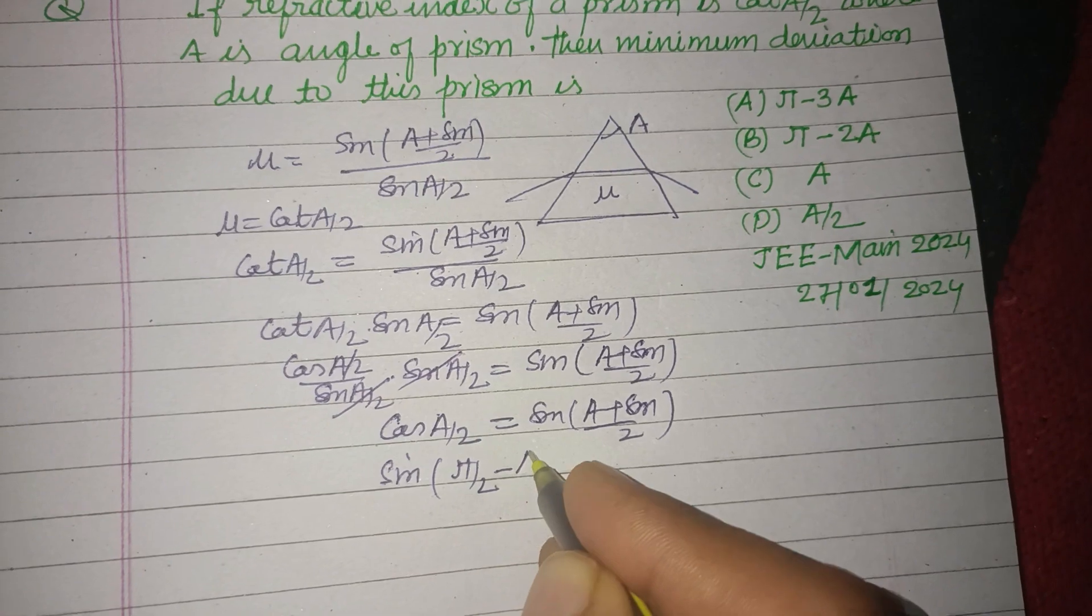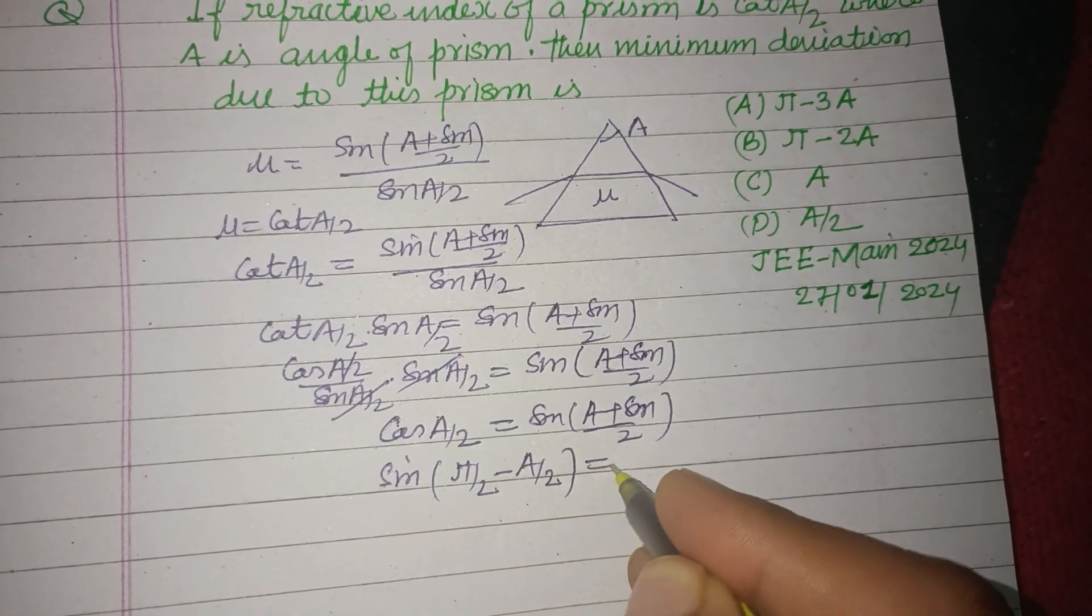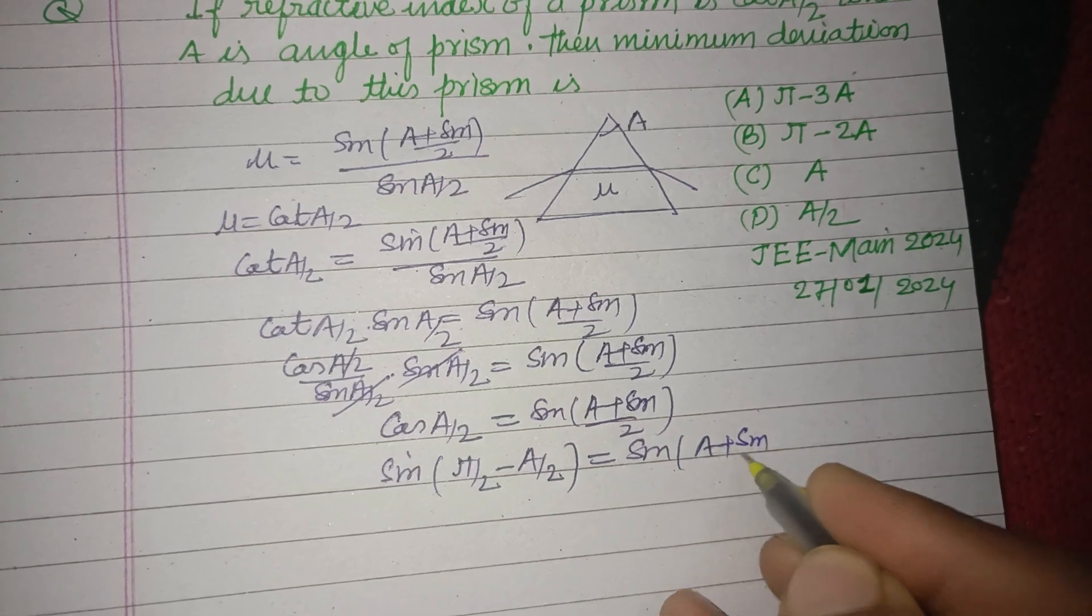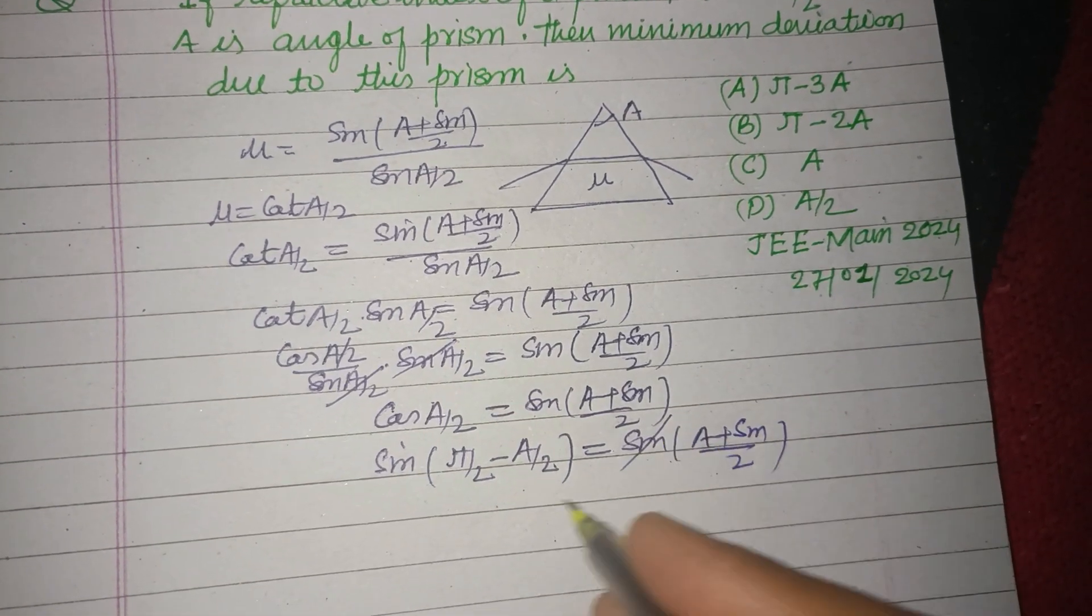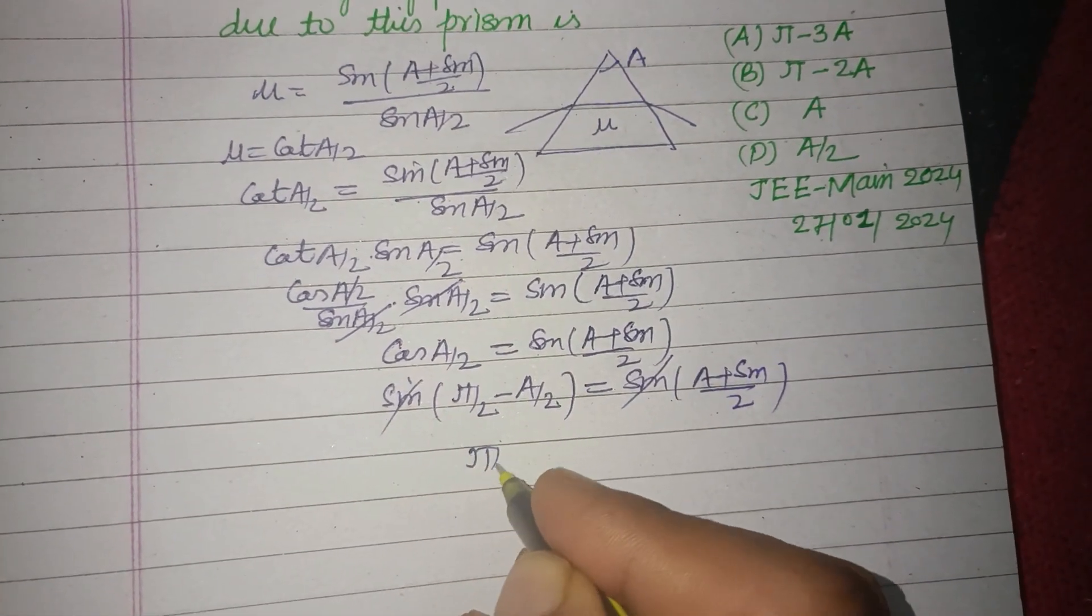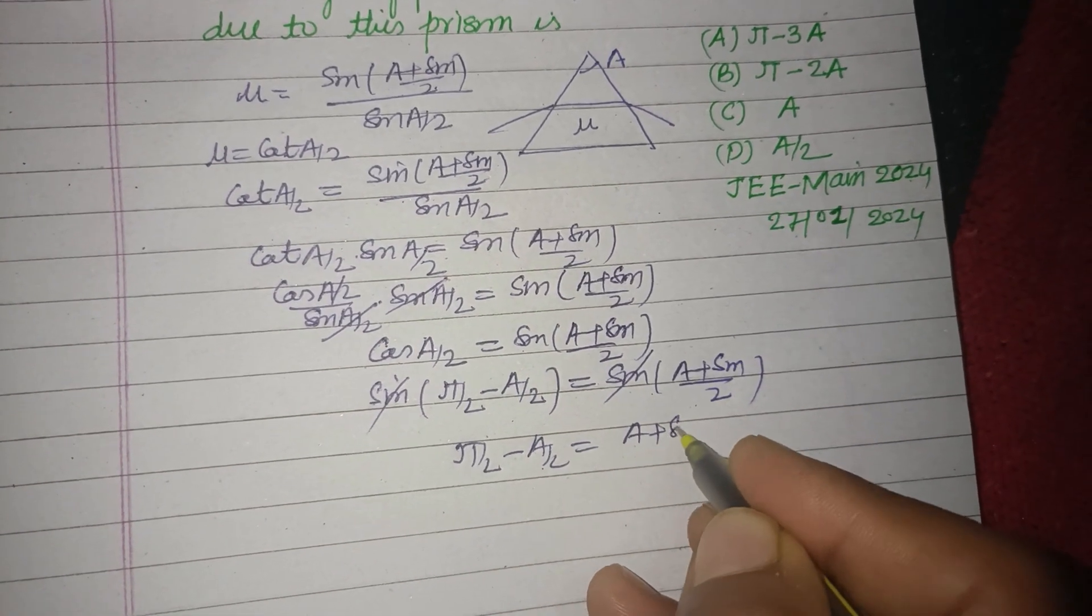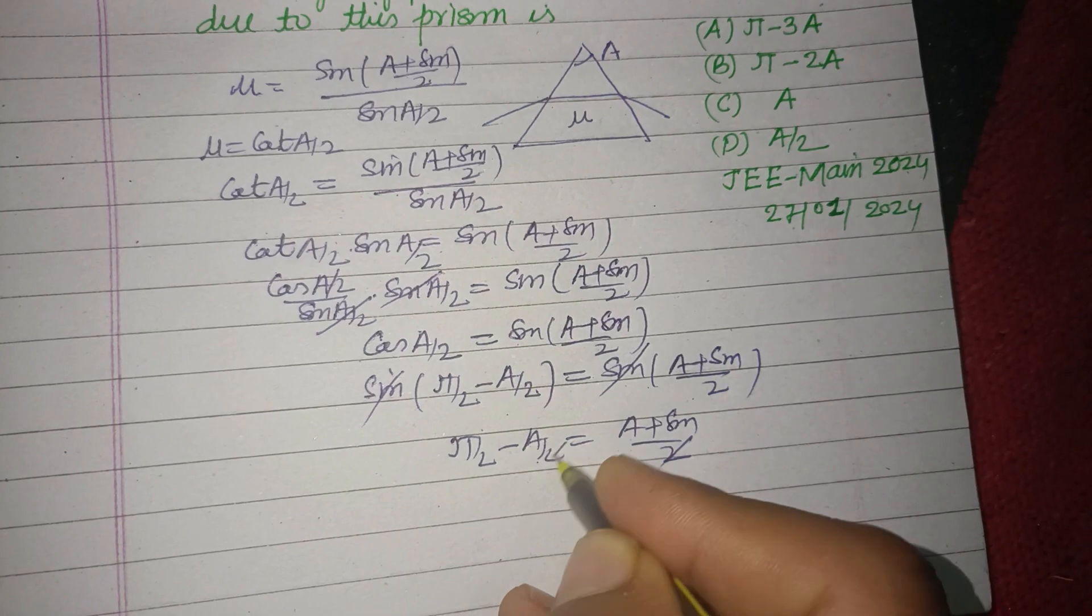sin(π/2 minus A/2) equals sin(A plus δm by 2). The sines cancel, so π/2 minus A/2 equals A plus δm by 2. The 2s are removed, so π minus A equals A plus δm.